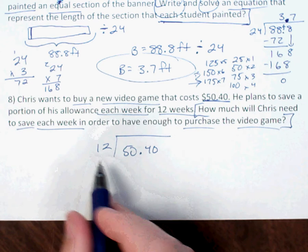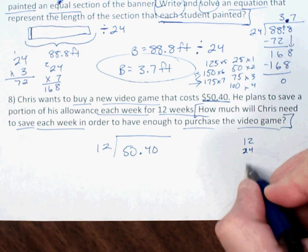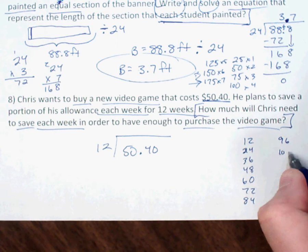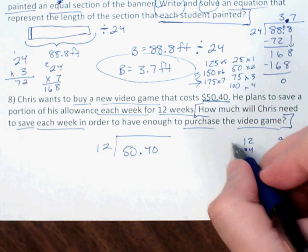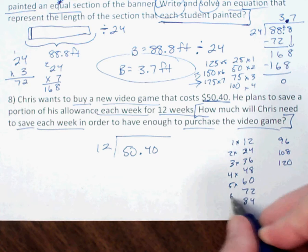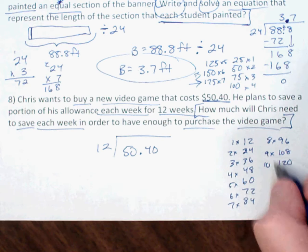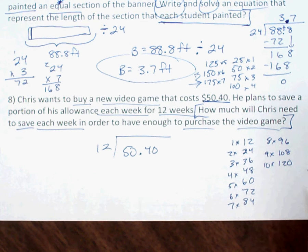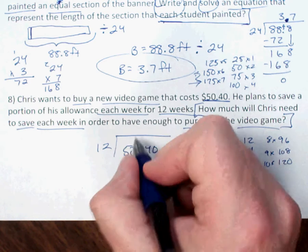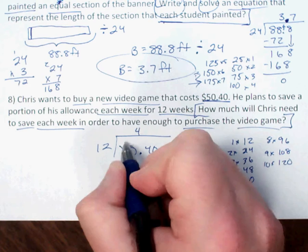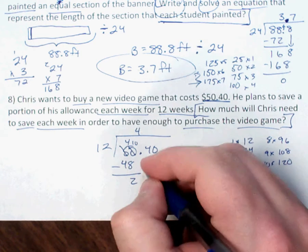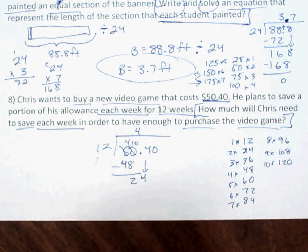I'll use multiples of 12: 12, 24, 36, 48, 60, 72, 84, 96, 108, 120. You shouldn't need to go higher than 10 when dividing; if you do, you've probably made a computation error. 50 — 12 goes into 50 about 4 times. 4 times 12 is 48. Regrouping: 10 minus 8 is 2, 4 minus 4 is nothing. Pull down the 4, giving 24. 12 goes into 24 twice.